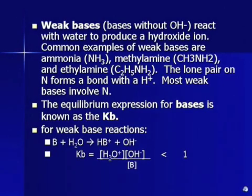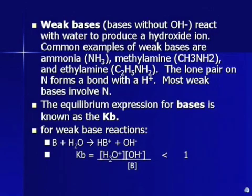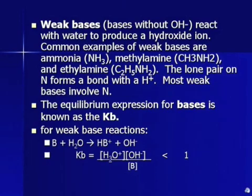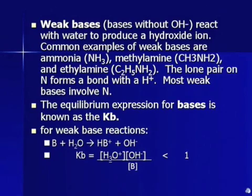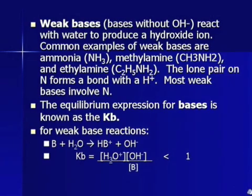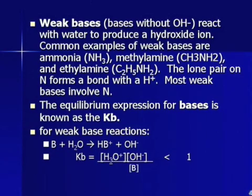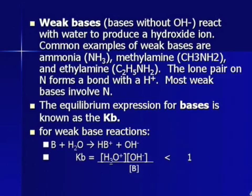Weak bases — bases without OH− or oxide — react with water to produce a hydroxide ion. Common examples are ammonia, methylamine (CH3NH2), or ethylamine (C2H5NH2). The lone pair on the N forms a bond with H+, so in methylamine it becomes CH3NH3+. Most weak bases involve an N. The equilibrium expression for bases is Kb: the base plus water yields HB+ plus OH−, and you write it the same way as Ka except with OH− on top.